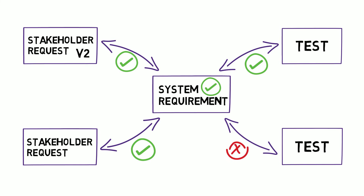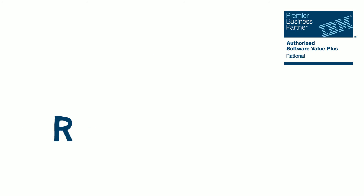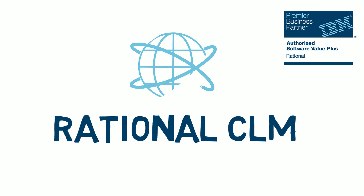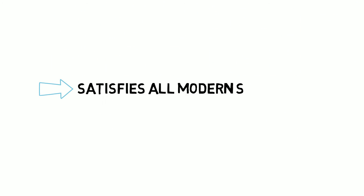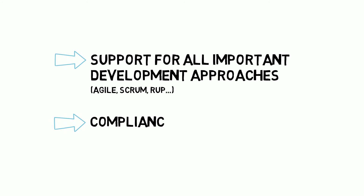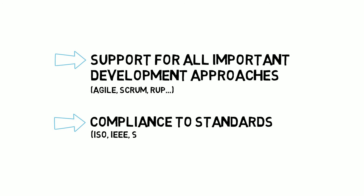Rational CLM is a worldwide leading comprehensive solution for application lifecycle management that equally satisfies software and system engineering needs. It can satisfy all modern development standards and challenges. CLM provides support for all important development approaches like Agile, Scrum, RUP, etc., and also provides compliance to standards like ISO, IEEE, or SPICE.